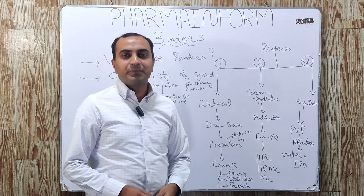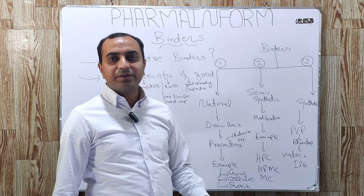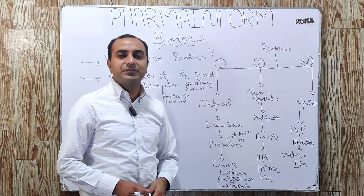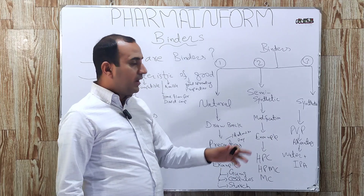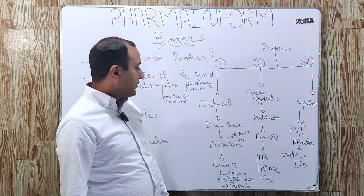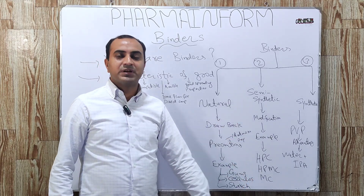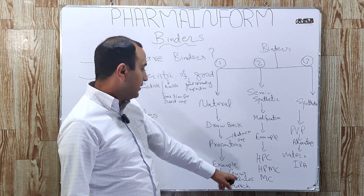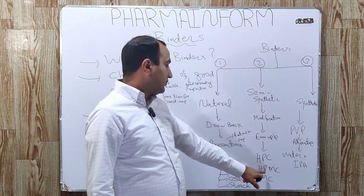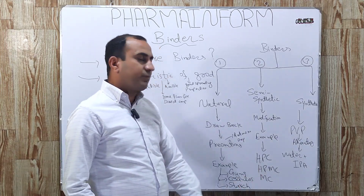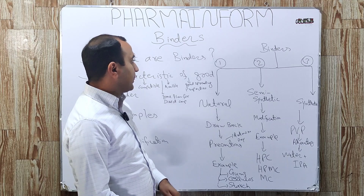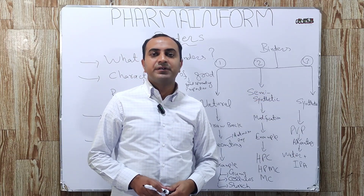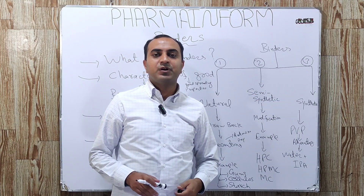The next class is semi-synthetic binders. Semi-synthetic binders are manufactured by making some modifications to natural binders. Examples are methyl cellulose, hydroxypropyl cellulose, and hydroxypropyl methyl cellulose.